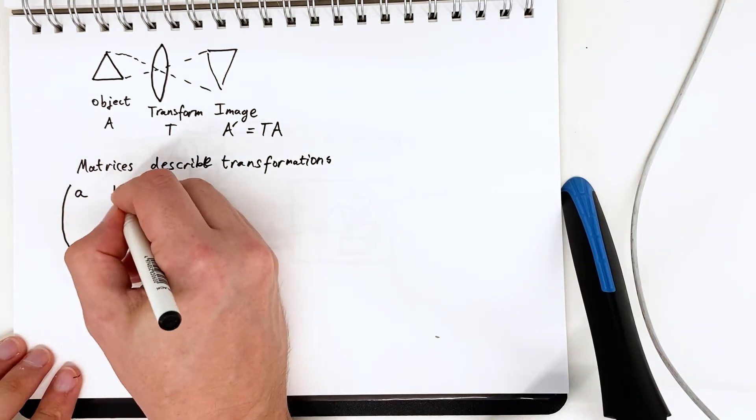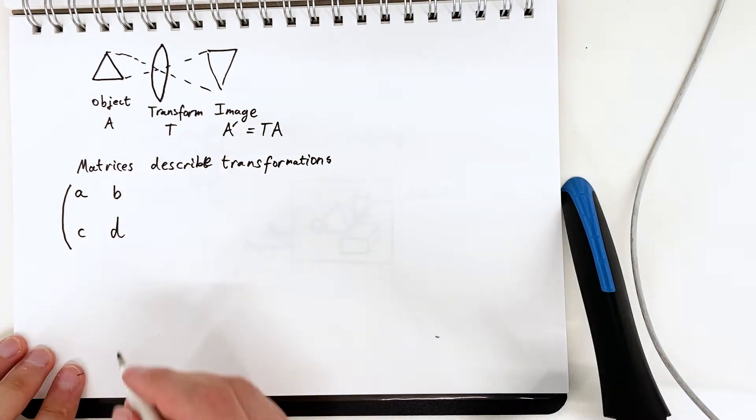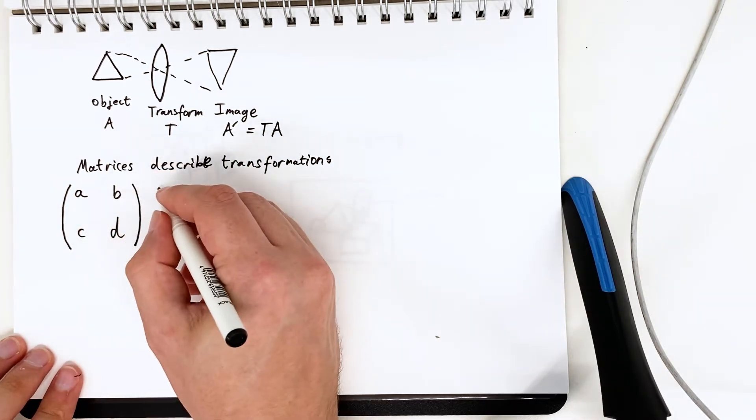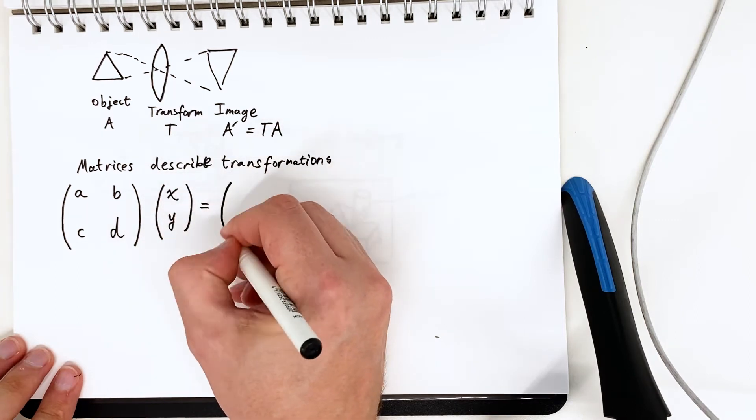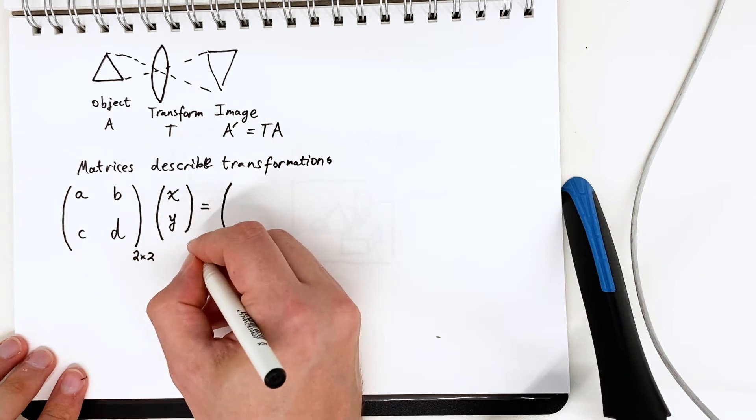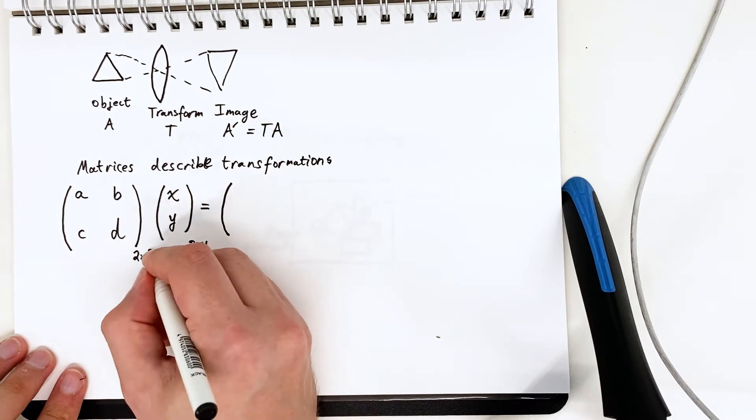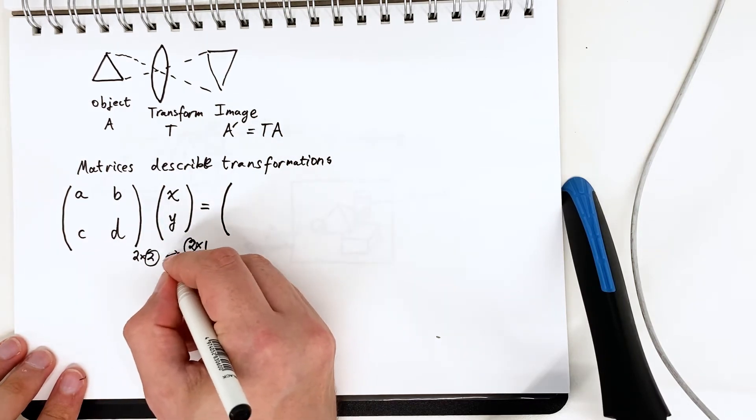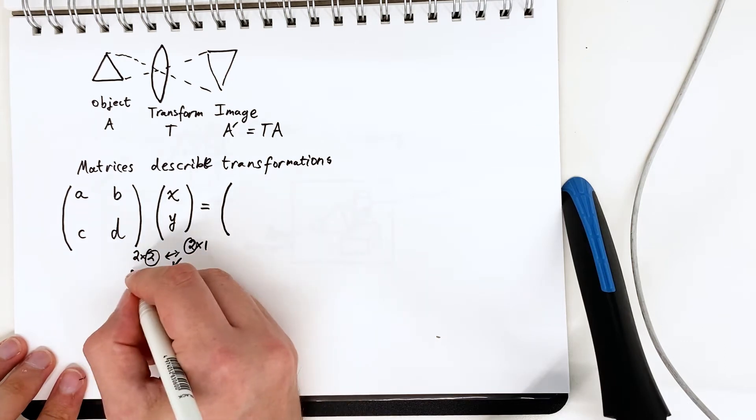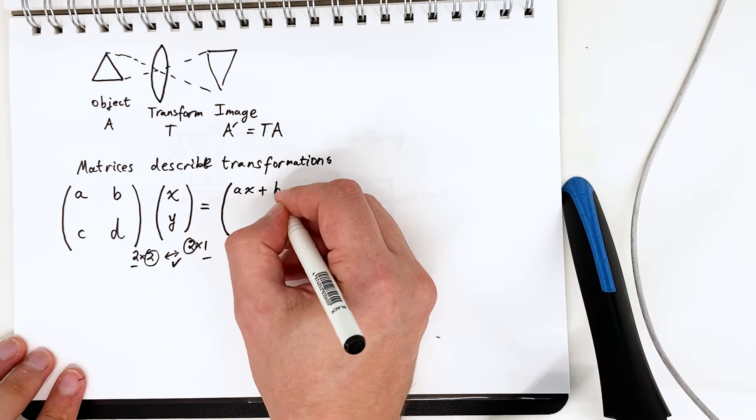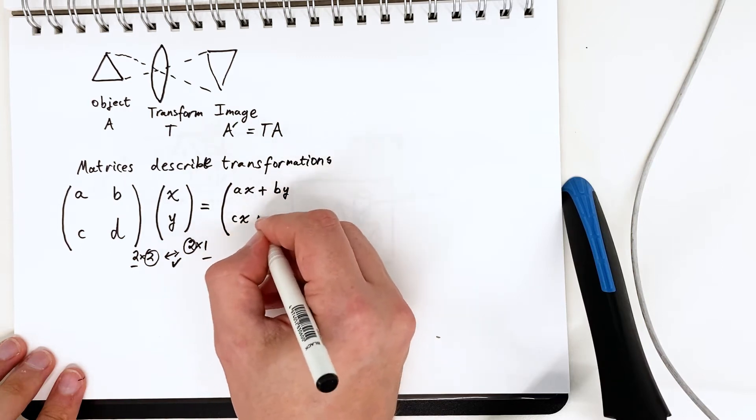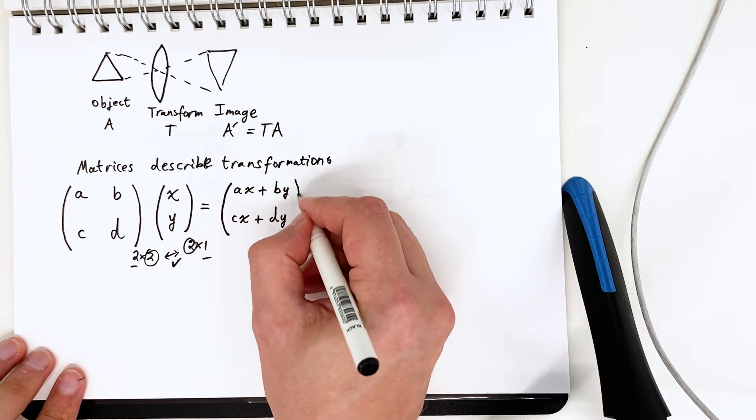So the mathematical structure which represents the transformation is a matrix. We can see here an example of a general 2x2 matrix. It's 2x2, we multiply it by an input vector which is 2x1. The inner dimensions match and the dimensions of the result are the outer dimensions. We can see it's a linear combination of the x y points that came in.